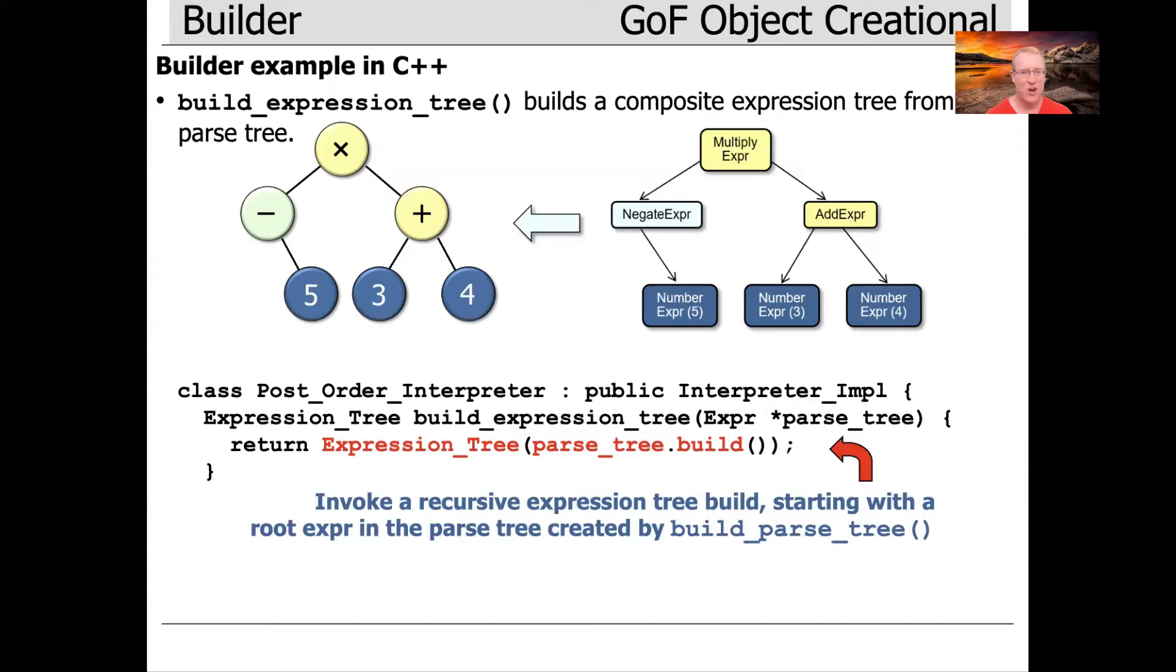As it turns out, this call actually triggers a whole series of recursive invocations, but this is where it starts. And what it's going to do is build the composite hierarchy corresponding to the parse tree. So we have an expression tree composite built from this.